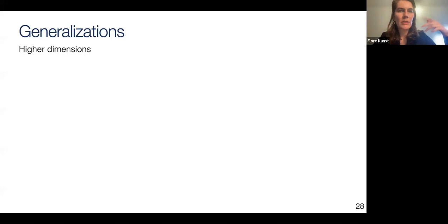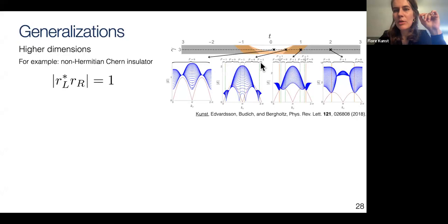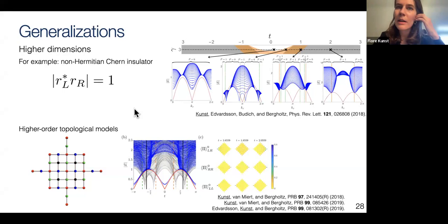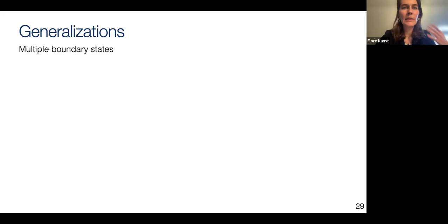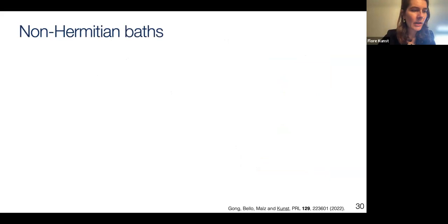The bi-orthogonal bulk-boundary correspondence can be generalized to higher dimensions, for example 2D. For the non-Hermitian Chern insulator example from my first slide, you can use this condition to write a phase diagram. You can also generalize to multiple boundary states — if you have two, three, or more boundary states, you can find a generalized bi-orthogonal polarization.